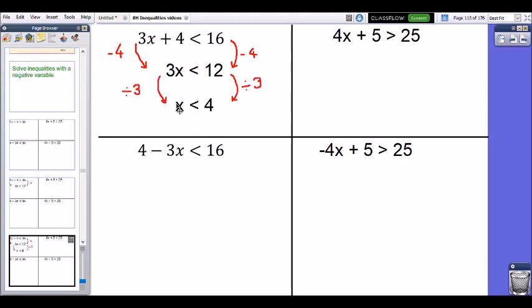So divide my left hand side by 3 to get the x on its own, but I must also remember to divide the right hand side by 3. So 12 divided by 3 is 4, so that means that as long as x is less than 4, 3x plus 4 will always be less than 16. So that is my solution.